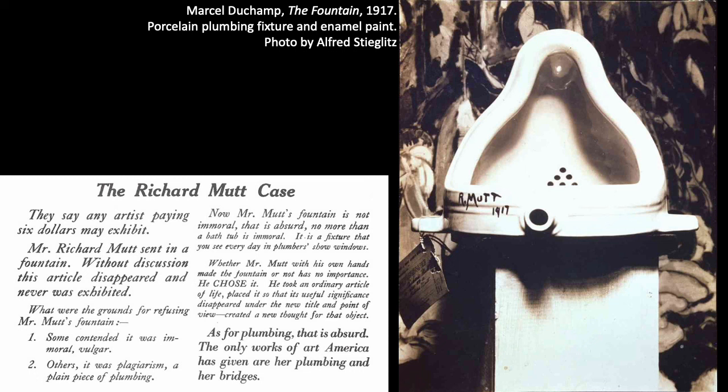After Fountain was rejected, Duchamp resigned from the Society of Independent Artists in mock shock and horror. Around the same time, an unsigned editorial published in a Dada journal — generally believed to have been written by Duchamp himself — described the R. Mutt case: 'Whether Mr. Mutt with his own hands made the fountain or not has no importance. He chose it. He took an ordinary article of life, placed it so that its useful significance disappeared under the new title and point of view, and created a new thought for that object.'